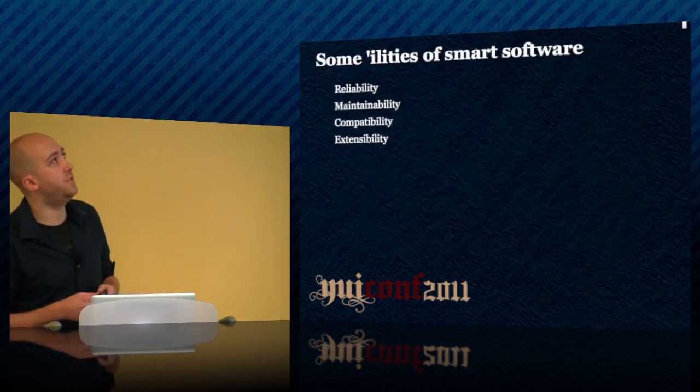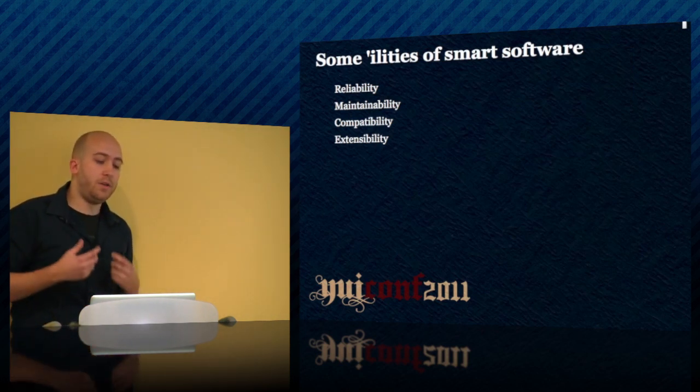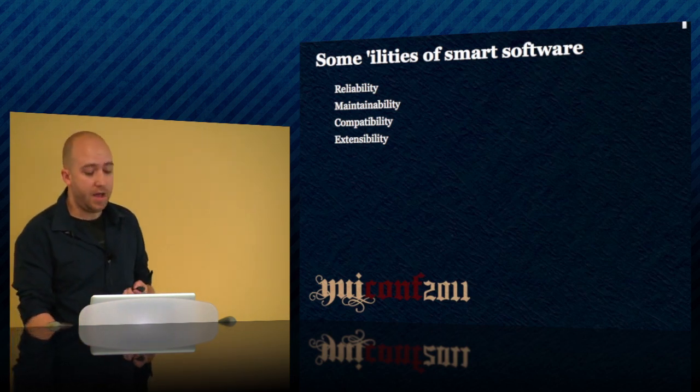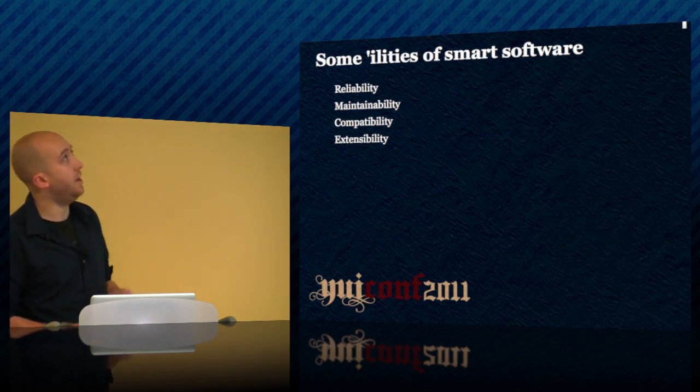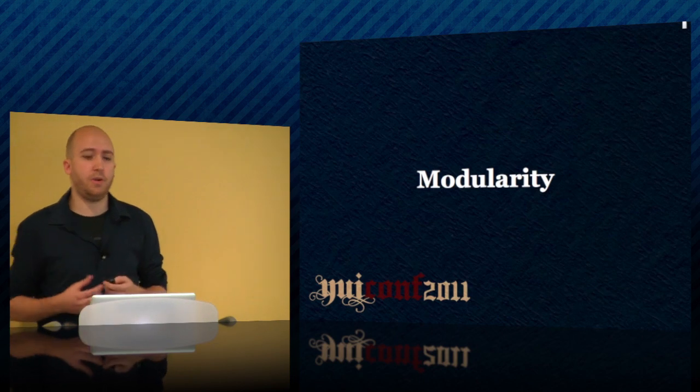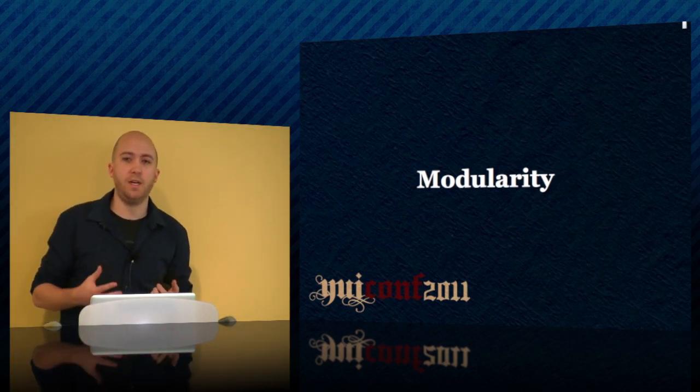When we talk about architecture in the sense of software, we're talking about something similar in design to the space station. Well-architected software is software that promotes reliability, maintainability, compatibility, and extensibility. The first characteristic is modularity. Modules are a concept used across many engineering disciplines. In the space station sense, it refers to the 32 separately constructed components that make up the station. In a software sense, they similarly refer to bits of focused, interchangeable components that can be used to construct whatever application you're tasked with building.